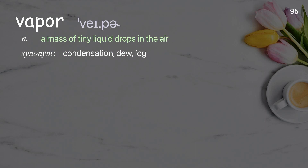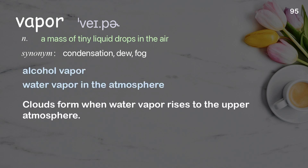Vapor: a mass of tiny liquid drops in the air. Examples: alcohol vapor, water vapor in the atmosphere. Clouds form when water vapor rises to the upper atmosphere.